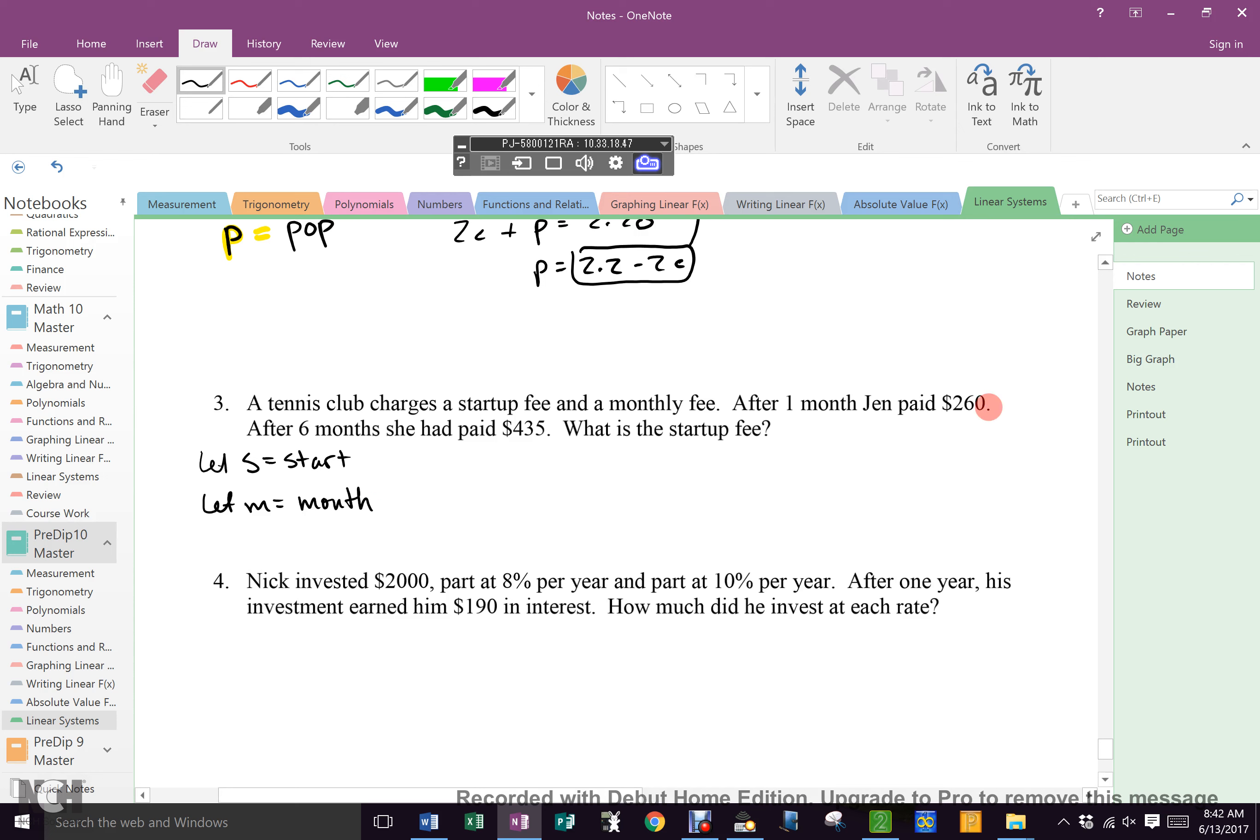After one month, Jen paid $260. How many startup fees do you pay? One. That's why it's called the startup fee. So an S plus how many monthly fees after one month? Just one. After one month. How much is that? $260. After six months, how many startup fees? One. Plus how many months? Six M's equals what? $435. There's your system. What would you use? They are both equally effective here. Why? Because you can isolate both S and M there, right? Or you could subtract and eliminate S right there, couldn't you? Both of them would be acceptable. And we're going to stop there. I'm going to let you guys do that as part of your work today. Okay?